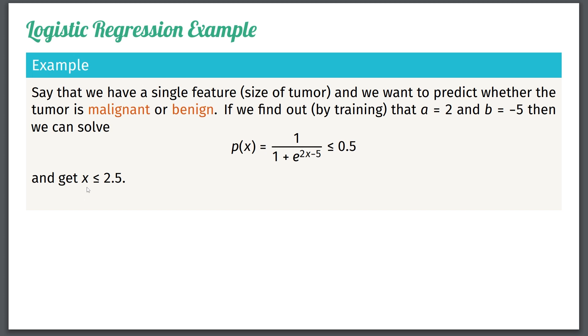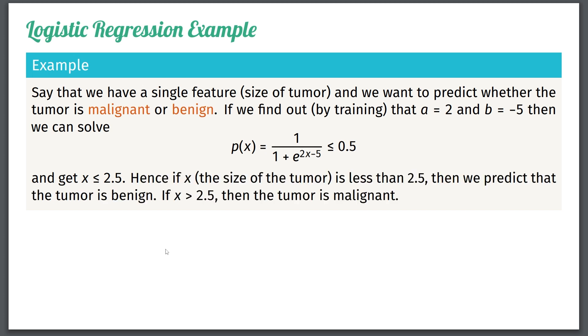So what does this mean? This means that if x, remember x is the size of the tumor, is less than 2.5, then we predict that the tumor is benign. If it's greater than 2.5, then the tumor is malignant. So in here, to clarify, benign has been encoded as a 0 and malignant has been encoded as a 1. So if the size of the tumor is less than 2.5, you're a 0. If it's greater than 2.5, then you're a 1.